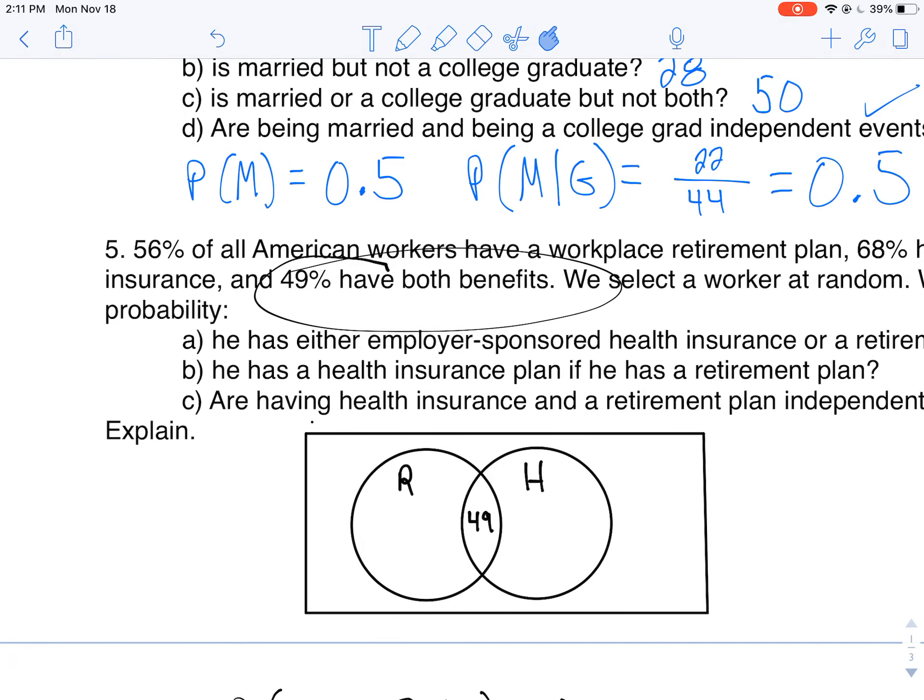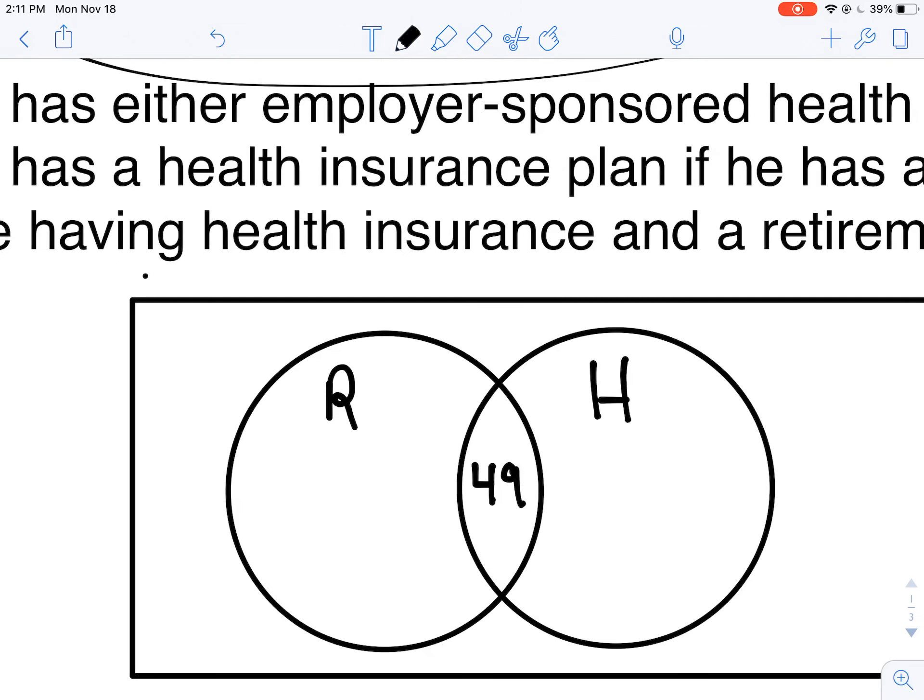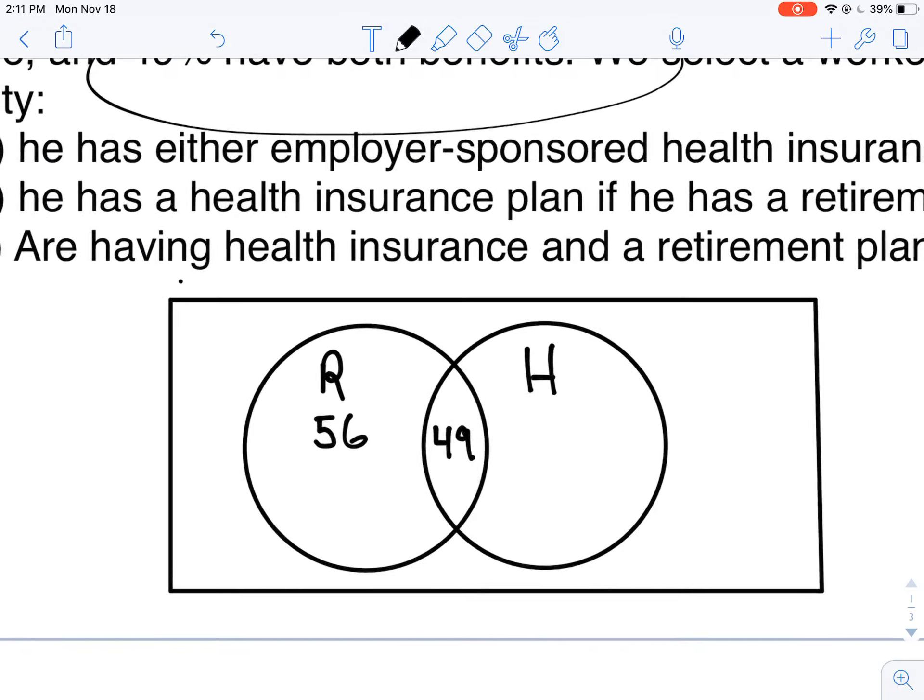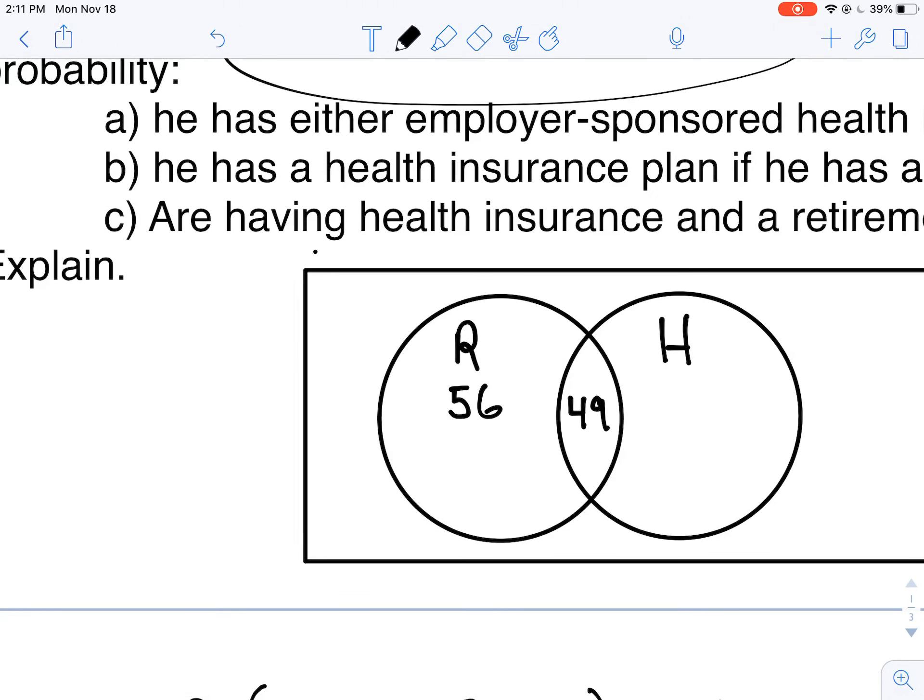They tell me 56% of American workers have a retirement plan. Now remember when they tell you that, there's no only involved in here. They're not saying that they only have a retirement plan. So I'm gonna take away that 49, which gives me 7. This gives me that 56% that do have a retirement plan. It includes those who also have health insurance.